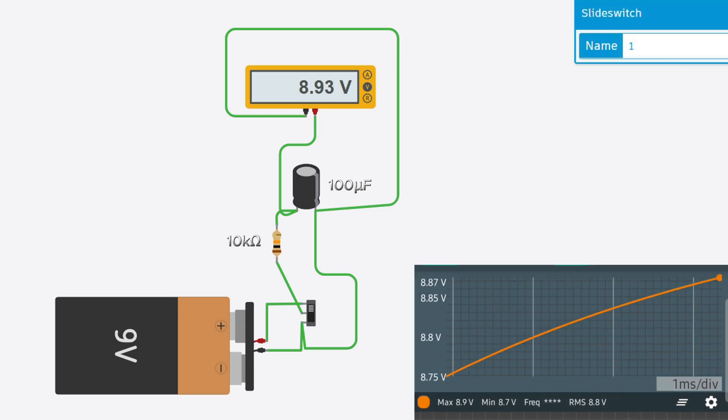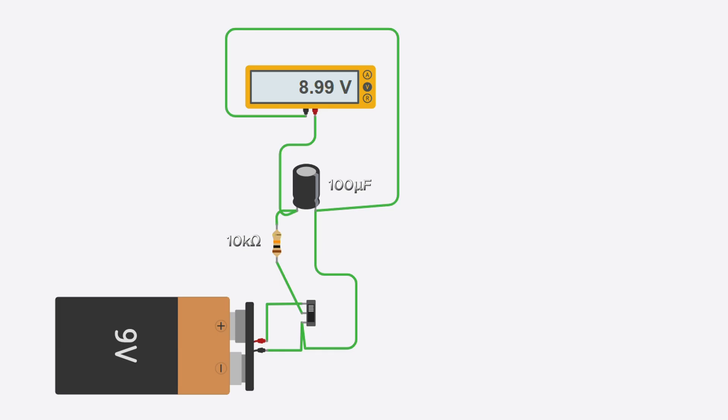Now, let's disconnect the power source and observe the capacitor discharging to the resistor. Notice how the voltage decreases exponentially.